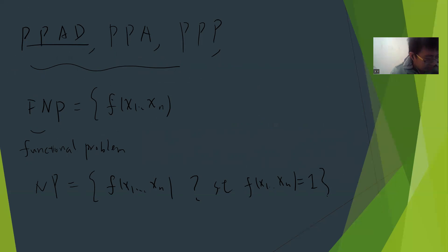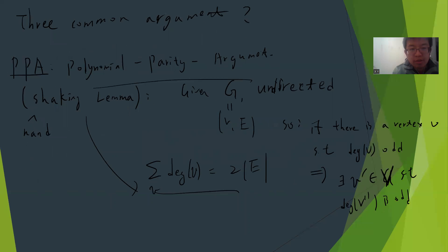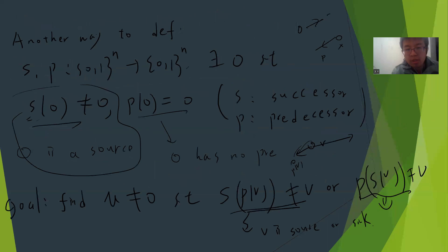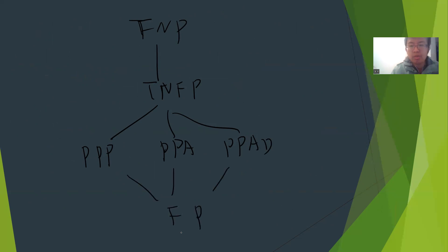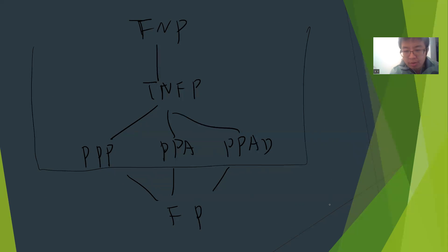Your solution is guaranteed either by a parity argument via the handshaking lemma, or this end-of-line problem, or this PPP problem. And obviously they're all larger than FP. So we can draw the following diagram: we have NP, FNP, and TFNP is a subset. And you can draw from PPP, PPA, PPAD — and all these are in FP. FP is a problem that you can solve in polynomial time. There's a complexity argument that all these three are different from P. Okay, see you guys next video.